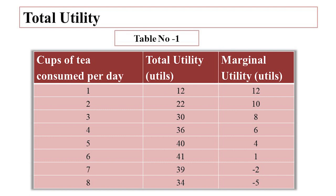As the consumer takes more cups of tea in a day, his total utility goes on increasing until the sixth cup. Total utility rises to 30 utils on consuming 3 cups, to 36 utils on consuming 4 cups, to 40 utils on consuming 5 cups, and to 41 utils on consuming 6 cups.